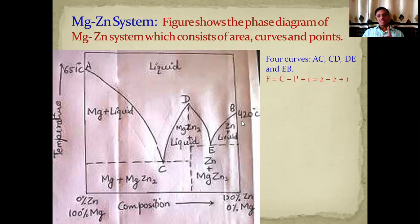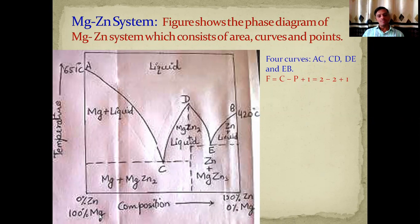Two temperatures need to be remembered for the phase diagram of MgZn₂. One is 651°C, which represents the melting point of magnesium. The other is 420°C, which represents the melting point of zinc.